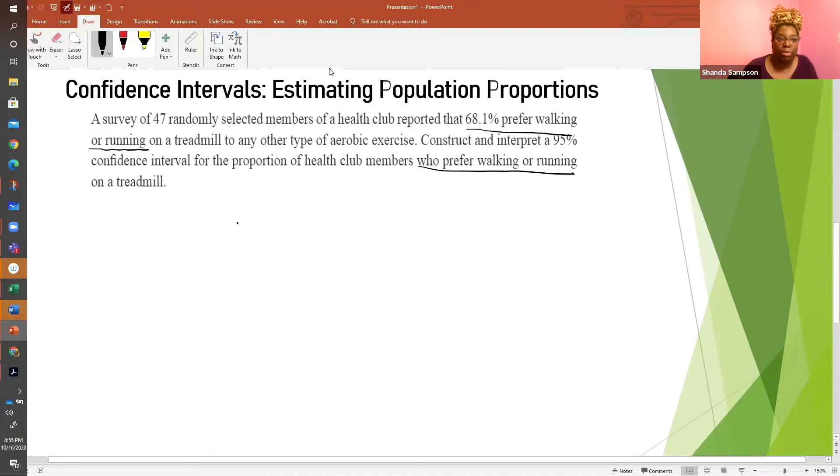So let's pull out all our numbers. N equals 47. Now 47 randomly selected members of the health club, they reported. So this is going to be what? This is going to be P hat, not P, because P hat is the proportion of the sample. And that's who they're talking about. So P hat is equal to 0.681. And then we look down, they want you to construct a 95% confidence interval, right? Let's get busy, see if we need anything else. So we're constructing a confidence interval.